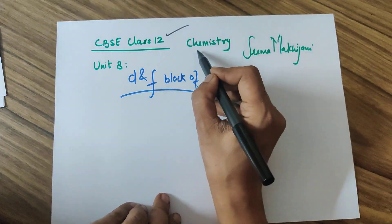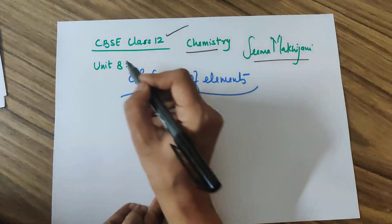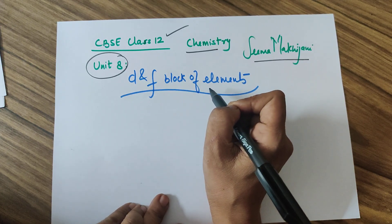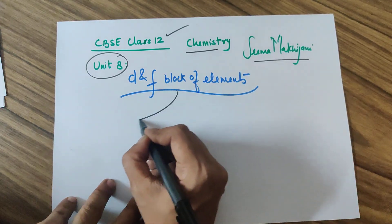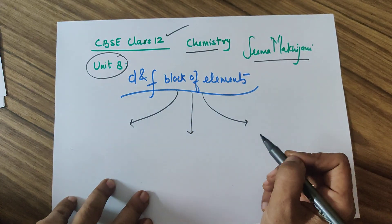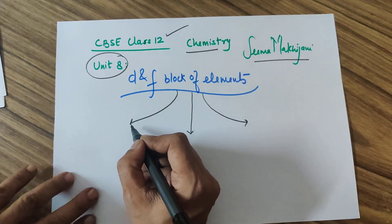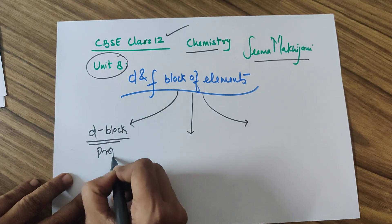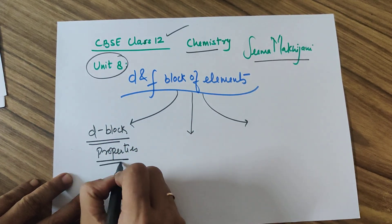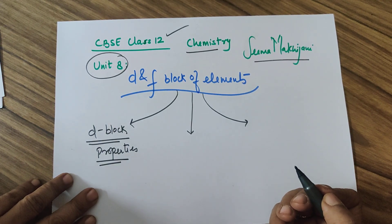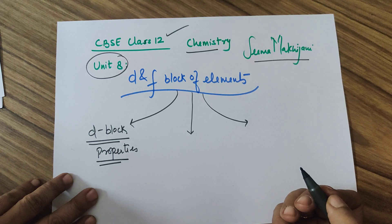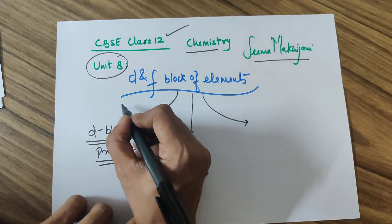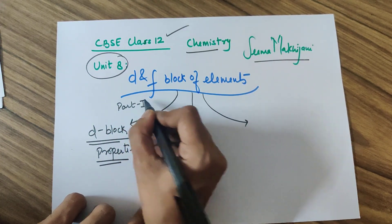Good evening class 12. We are back to the chemistry class by Sima Makijani. Today I'll be doing Unit 8: D and F Block Elements. This chapter is huge and I have split it into three parts. Part 1 covers the D block elements and their properties — roughly 12 to 14 properties — along with reasons and justifications related to their electronic configuration.